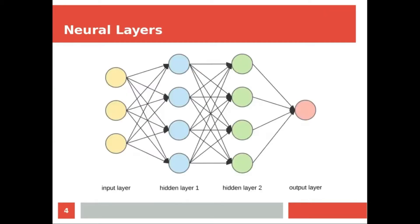Another class is the Neural Layer class. Neural Layer class is an abstract class which defines the layer architecture of how one layer of a neural network should look like. Basically, in a neural network we have three layers: first is the input layer, second is the output layer, and between input and output layer there can be n number of hidden layers.